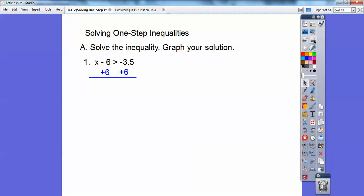Here's number one. I already showed the work right there. It's just like solving equations. You have that inequality, x minus 6 is greater than negative 3.5. Just like solving equations, you'd add 6 to both sides. When you add 6, the 6s will cancel, and you get x is greater than 2.5.